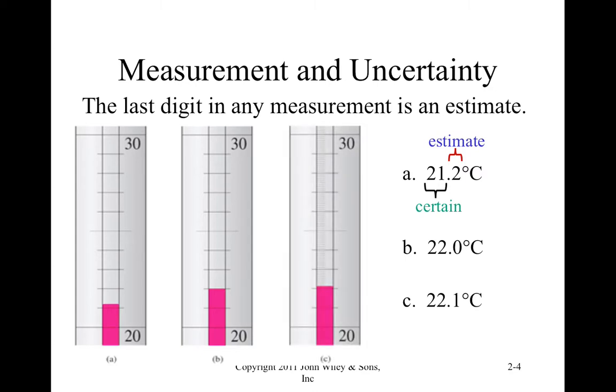And lastly, we have another measurement where the alcohol level is definitely above 22 degrees, but there's a little bit more above that tick mark. And notice that this person, they estimated it to be 0.1 because it's slightly lower than the first thermometer. So they made that last digit equal to 0.1. So that digit is considered uncertain and an estimate.